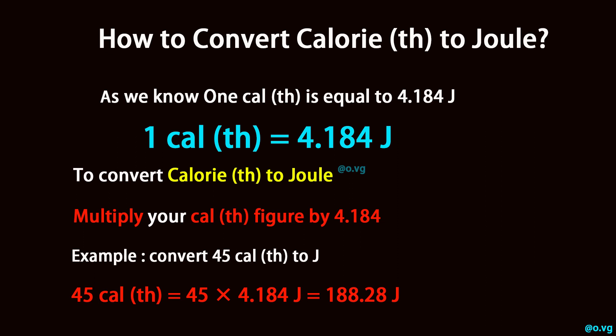Example: convert 45 calorie (th) to joule. 45 calorie (th) is equal to 45 times 4.184 joule equals 188.28 joule.